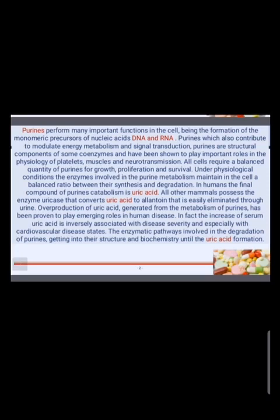Under physiological conditions, the enzymes involved in purine metabolism maintain in a cell a balanced ratio between their synthesis and degradation. In humans, the final compound of purine catabolism is uric acid. All other mammals possess the enzyme uricase, which converts uric acid to allantoin, which is easily eliminated through the urine. Overproduction of uric acid has been proven to play emerging roles in human diseases, and increased serum uric acid is inversely associated with disease severity, especially cardiovascular disease.